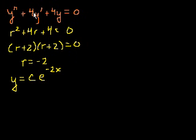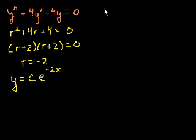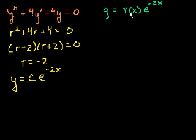In general, when we first thought about these linear constant coefficient differential equations, we guessed that e^{rx} might work, because all the derivatives of e are multiples of the original function. So if we're looking for a second solution, let's make a similar guess. Let our guess g equal some function v of x times our first solution e^{-2x}, and let's substitute it back into the original differential equation to see if we can solve for v.